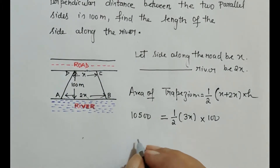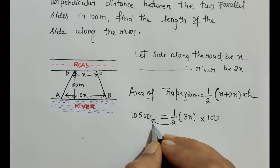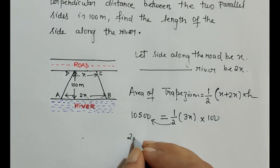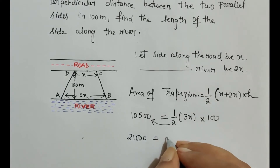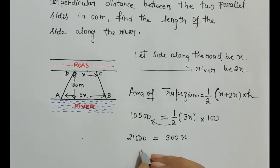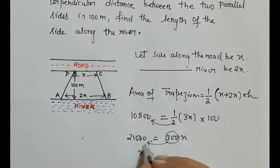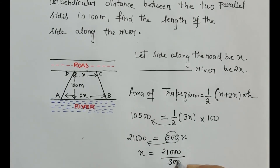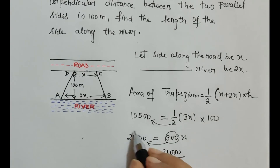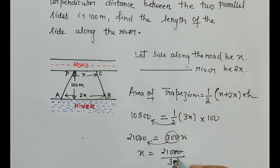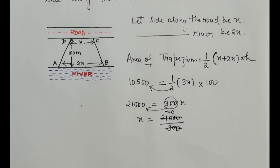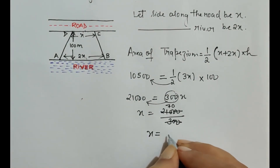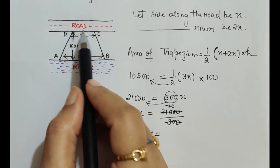Shifting 2 to the left-hand side and multiplying, we get 21,000 = 300x. Shifting 300 to the denominator: x = 21,000 ÷ 300. Cancelling two zeros, 21,000 ÷ 300 = 70. So the value of x, the side along the road, is 70 meters.